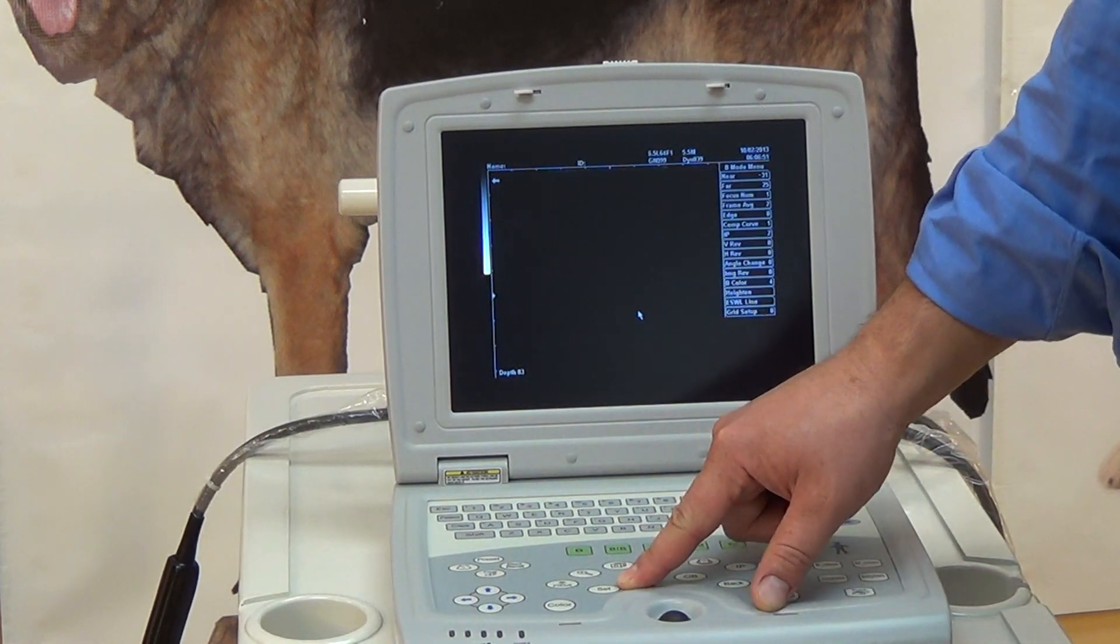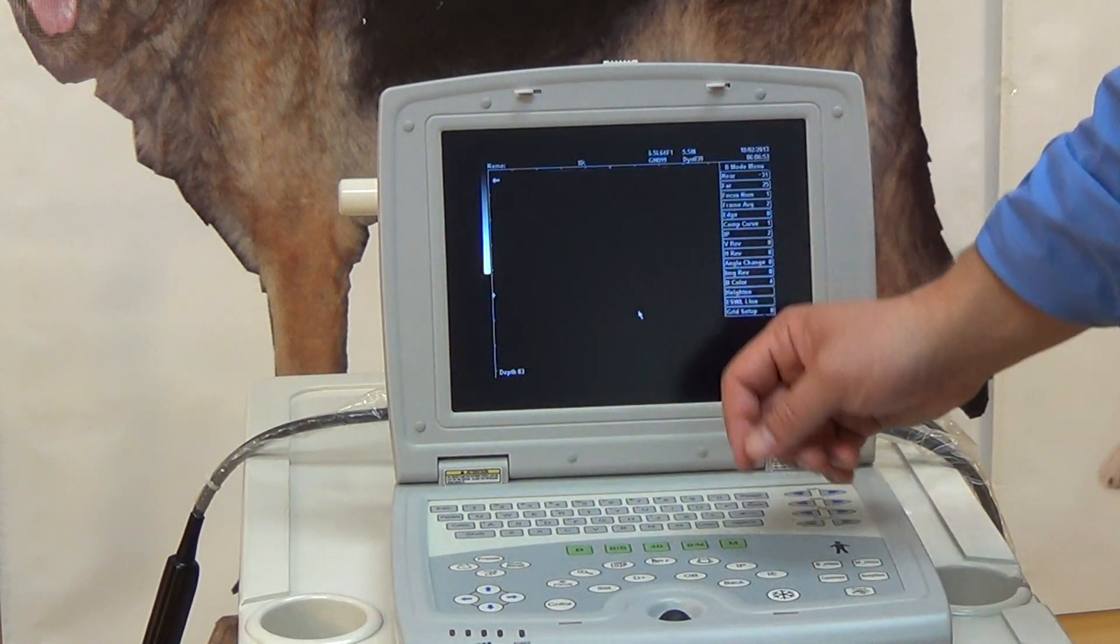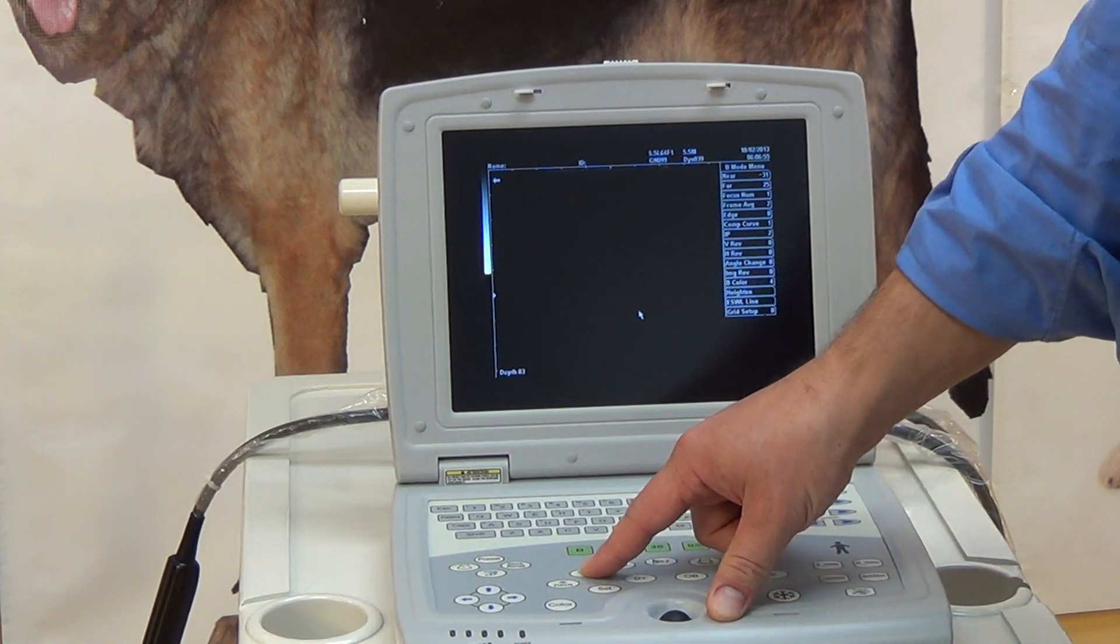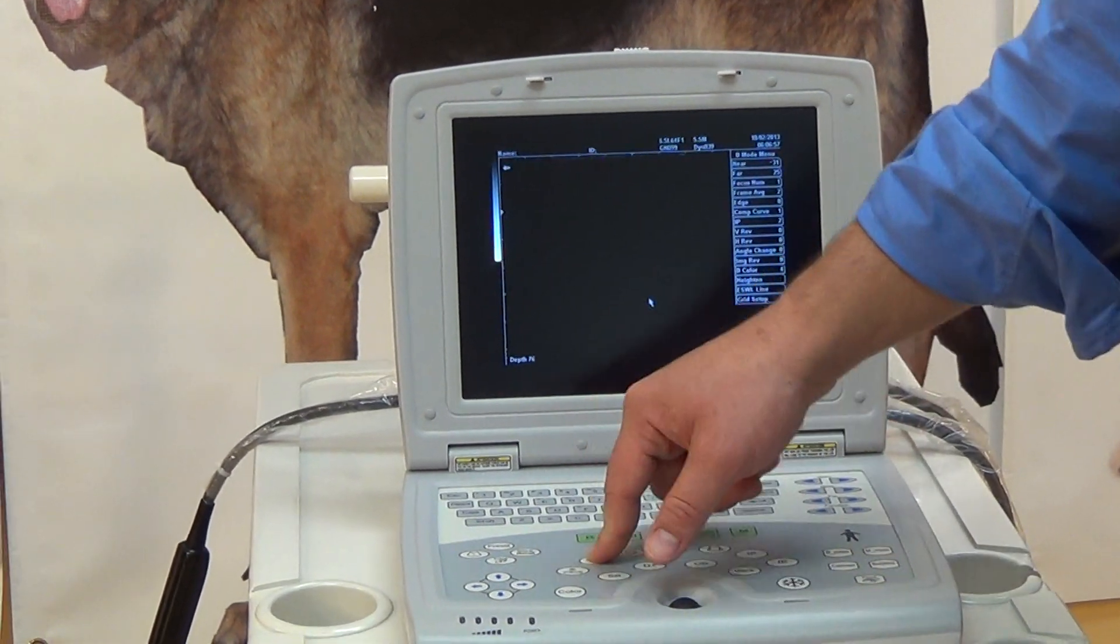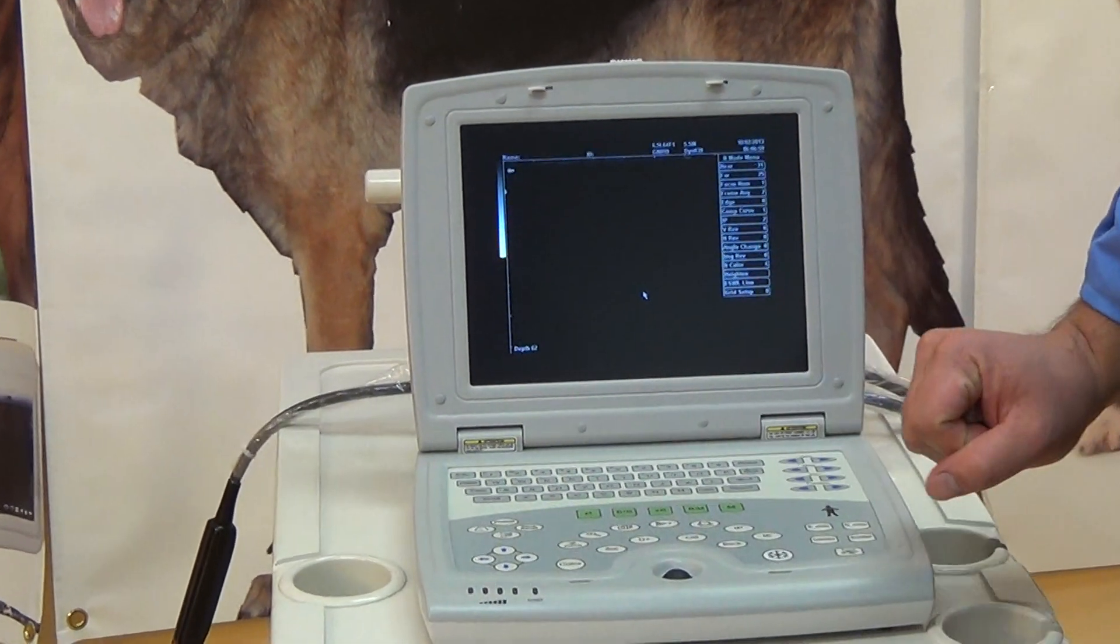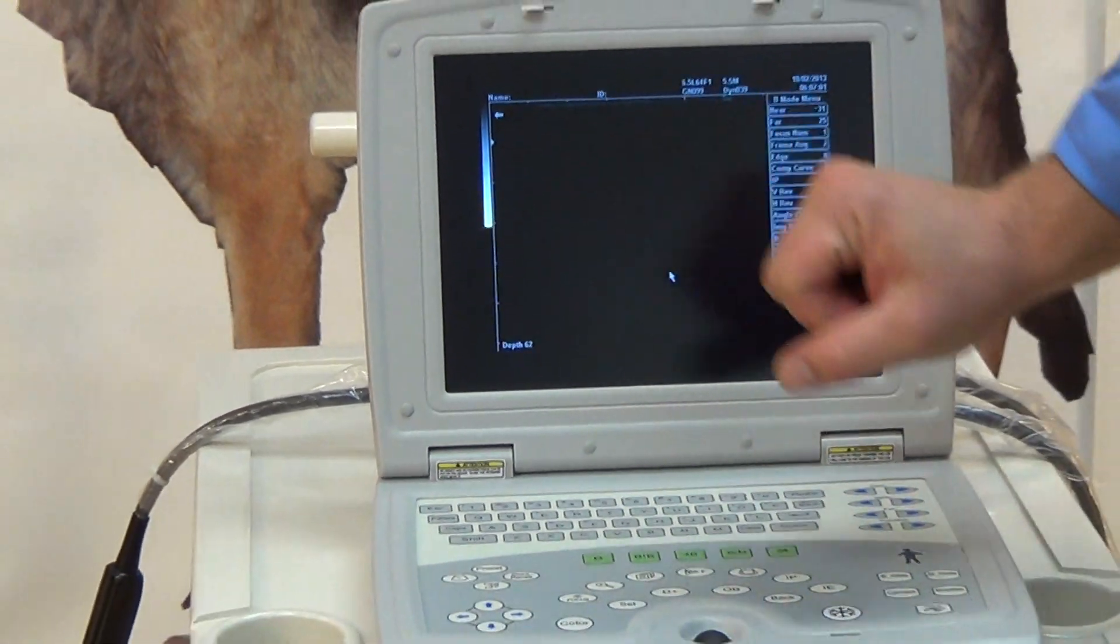We have our set button, which basically we use to set our measurements. This button here, magnifying glass, is somewhat self-explanatory. You zoom in. You can't really see it as well here because we don't have an image. But it just does an overall zoom.